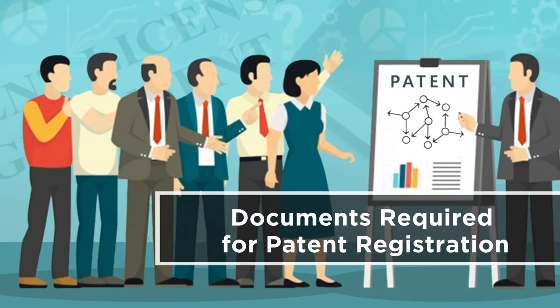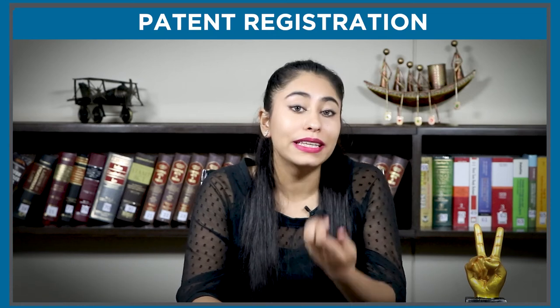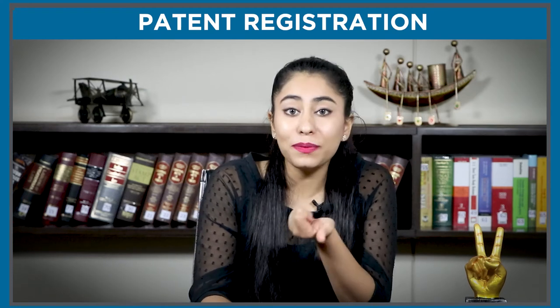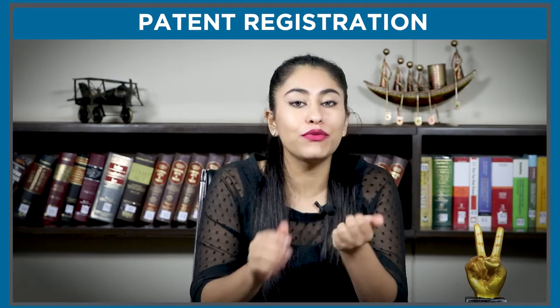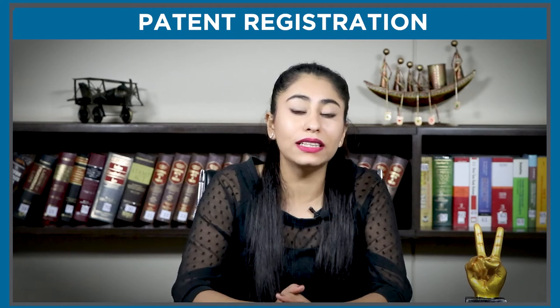Now let's understand the documents required for registration so you have everything ready when you file. You need the application for patent registration in Form 1, proof of right to file the patent application attached along with the application, and in case the applicant does not have the complete specification, he or she must file a provisional specification. In the case of provisional specifications, the applicant is required to file the complete specification within a period of 12 months in Form 2.